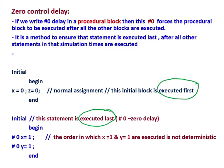So what is zero control delay? If we write #0 delay in a procedural block, that is called a zero control delay statement. When we write this #0, it forces the procedural block to be executed after all the other blocks are executed. It is a method to ensure that a statement is executed last after all other statements at that simulation time are executed.